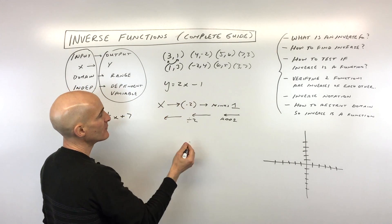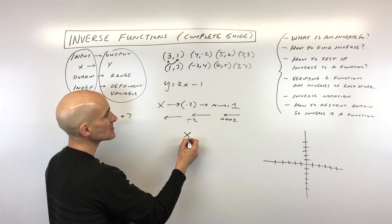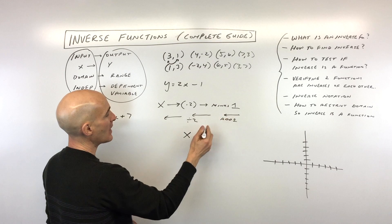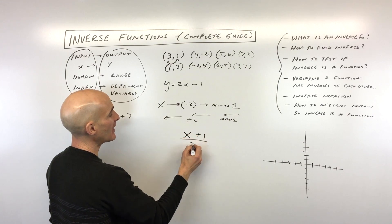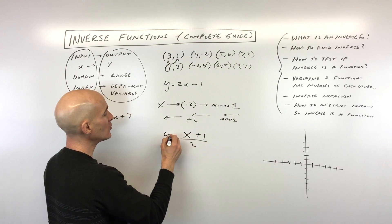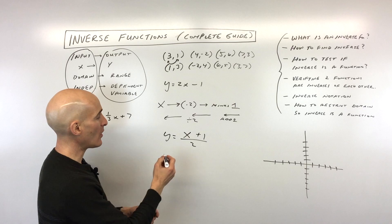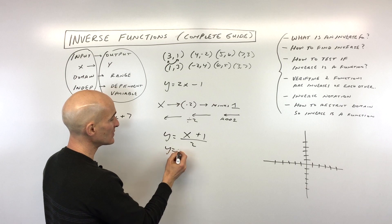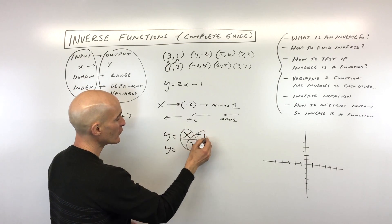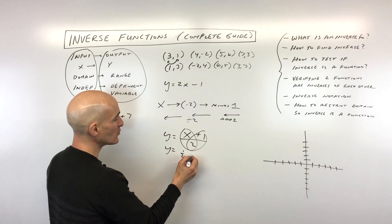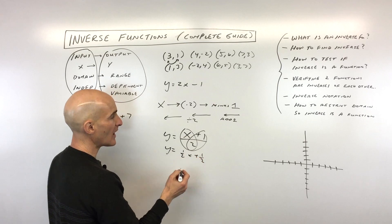So the inverse function starts with x, adds one, then divides that quantity by two — that's the new equation. We can write this differently by splitting into two fractions: y equals one-half x plus one-half. That's the intuitive way — think about reversing those steps.